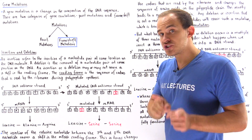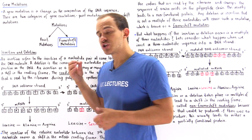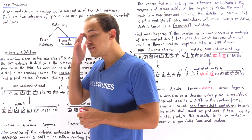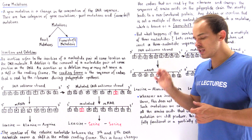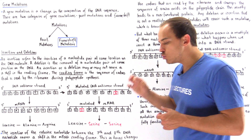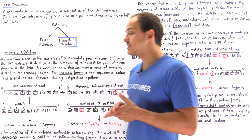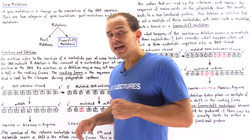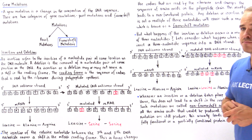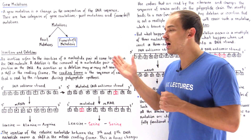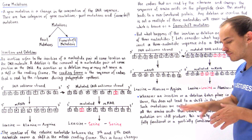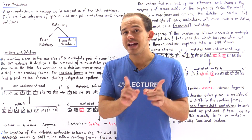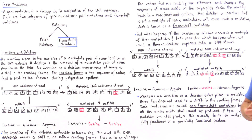Frameshift mutations are a result of insertions or deletions that take place on our DNA molecule. An insertion basically refers to the insertion of a nucleotide base pair or several nucleotide base pairs at some given location on our DNA molecule, while a deletion is the removal of a nucleotide pair or several nucleotide pairs at some given position. An insertion or a deletion may or may not shift the reading frame of our mRNA molecule.